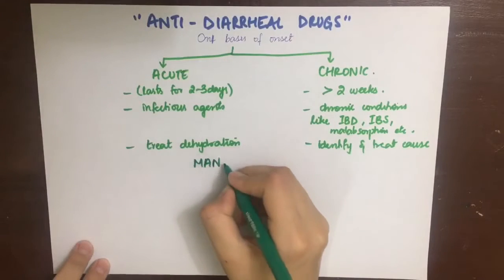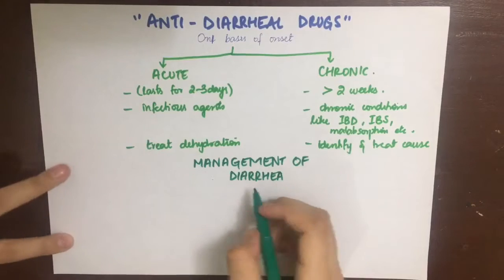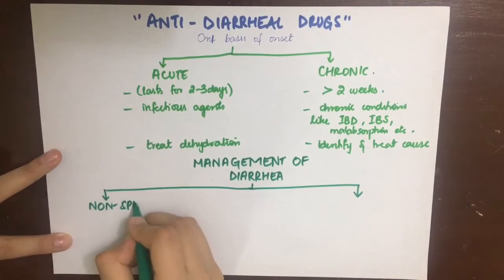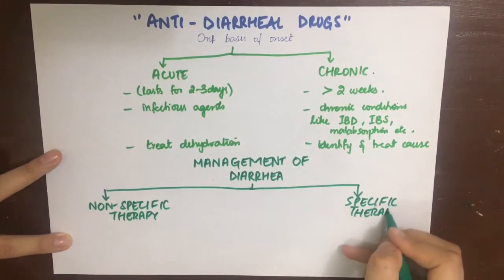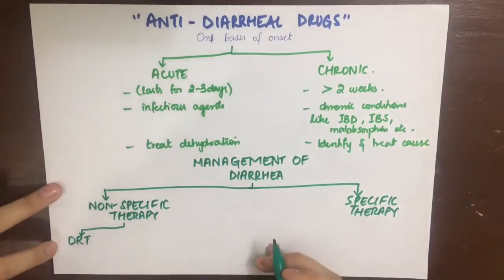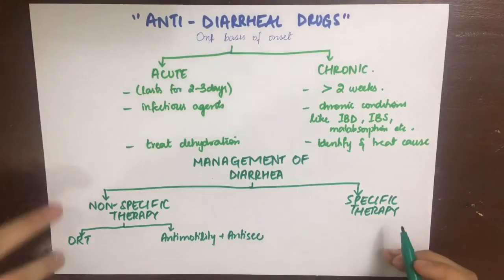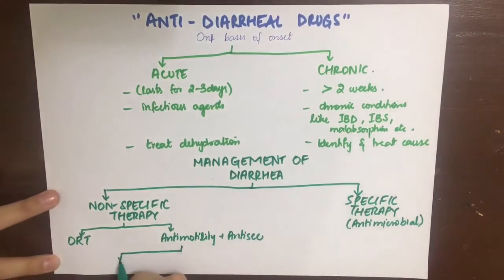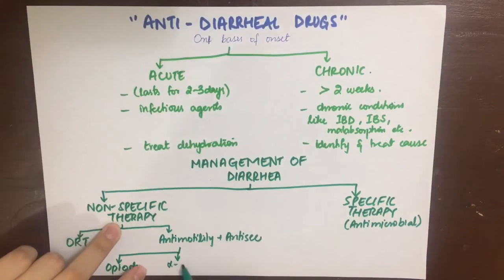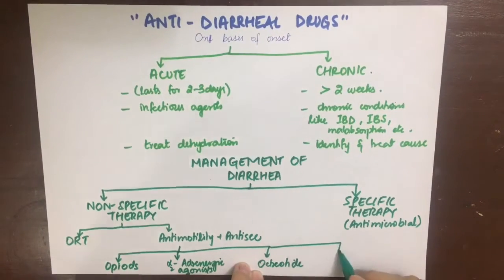In chronic diarrhea, the approach is to find out the cause and treat it. For the management of diarrhea we do two things: one is non-specific therapy for symptomatic treatment, and the other is specific therapy to find out the cause and treat it. Non-specific therapy includes oral rehydration therapy and anti-motility and anti-secretory agents. The main agents used are opioids, alpha-2 adrenergic agonists, octreotide, and racecadotril.